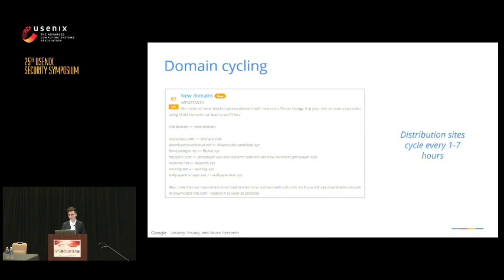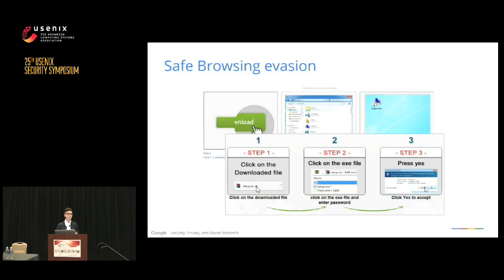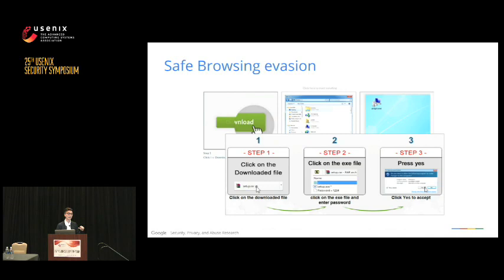The last technique is trying to prevent Safe Browsing from scanning the binaries users are downloading. One technique advertised on a website provided users step-by-step instructions on how to infect themselves: Step 1, install this RAR. Step 2, provide the password to decrypt it. Step 3, consent to the dialogue. This is a defunct technique now, but at the time it prevented Safe Browsing from scanning the binary and alerting the user that this was a likely unwanted software install.